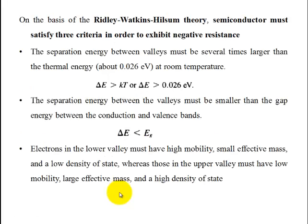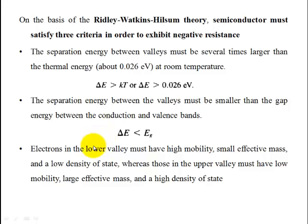Based on the RWH theory, a semiconductor must satisfy three criteria to exhibit negative resistance. First: the energy separation between the valleys must be greater than kT (thermal energy). Second: the energy separation must be less than the bandgap energy eG — meaning it must fall within the conduction band. Third: the lower valley electrons must have high mobility, small effective mass, and low density of states; whereas the upper valley must have low mobility, large effective mass, and high density of states.